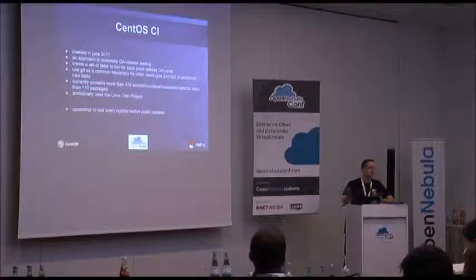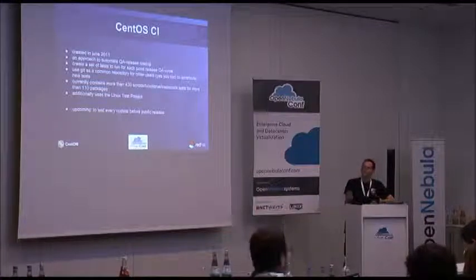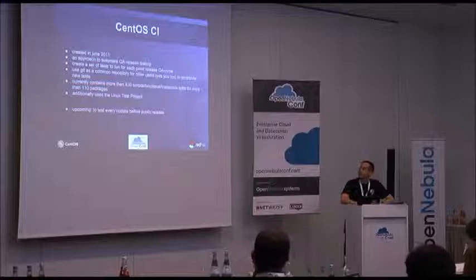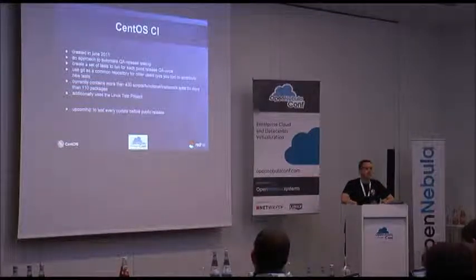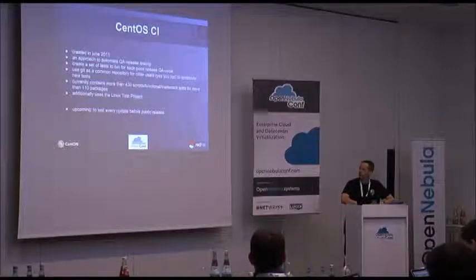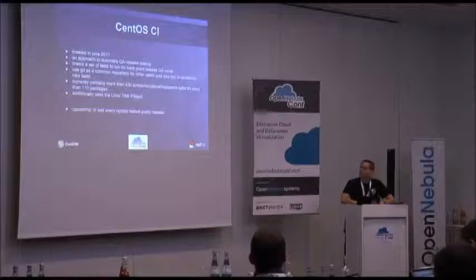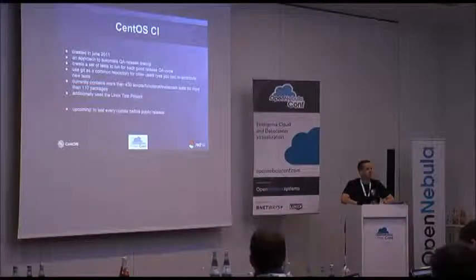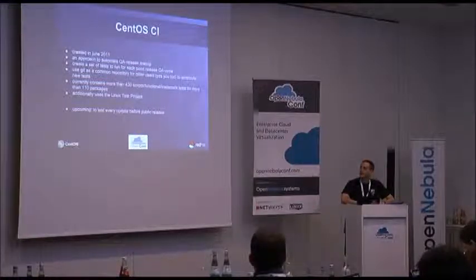We decided to set up a repository to have a common set of tests usable for every release of CentOS, for every point release, to be repeatable and also to speed up things. Currently, when we get a new tree build, the automation already starts with all the tests. We are currently at around 430 scripts which basically test high-level functions, trademarks, and whether stuff works as it should — for more than 110 packages within CentOS, starting with Anaconda and running over packages like FreeRADIUS, MySQL, HTTP, and ending with even zip. We also added the Linux Test Project to include basic Linux functionalities.